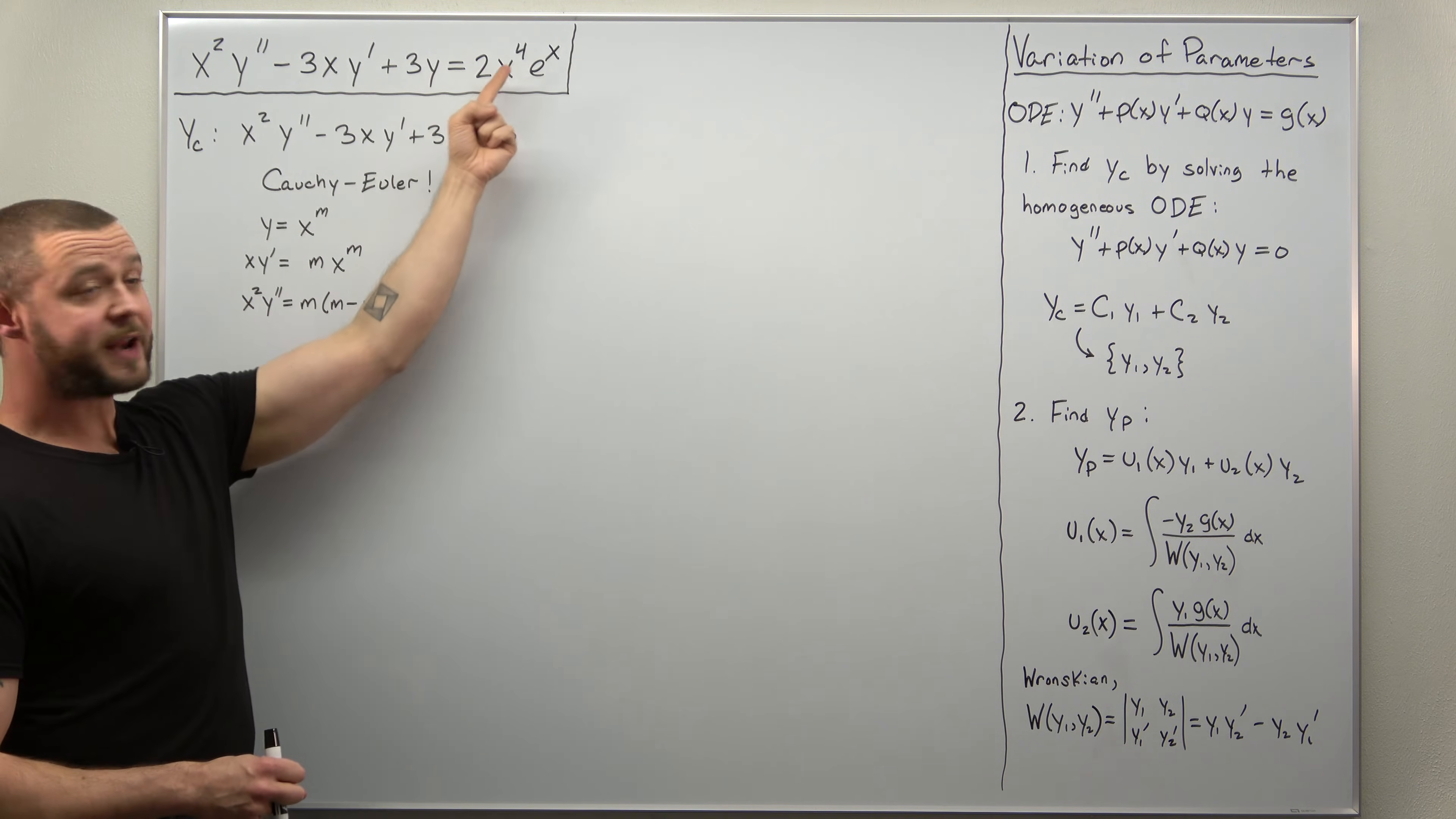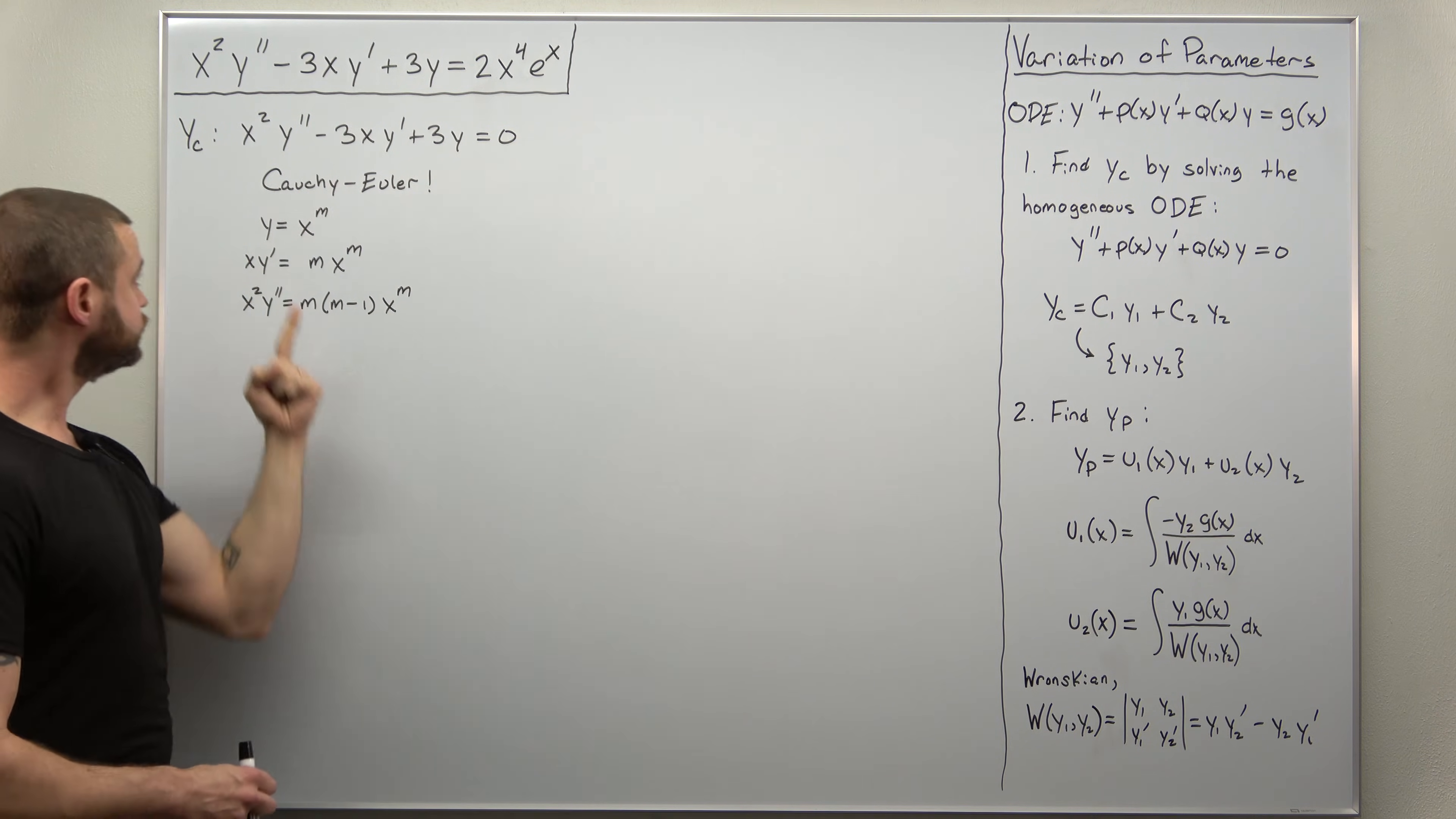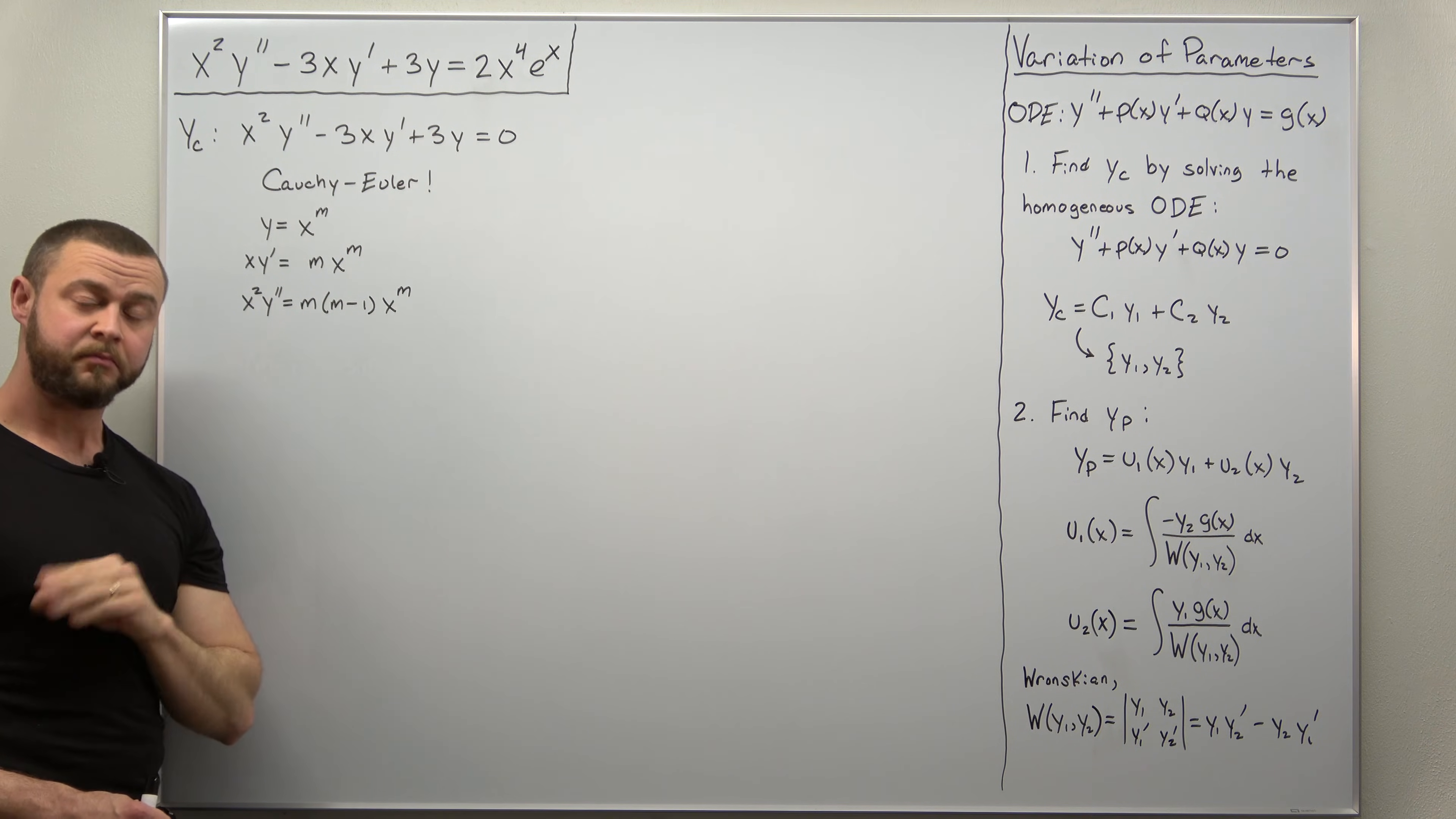So we're going to take the right-hand side, replace it with zero, and we get a Cauchy-Euler equation. We know how to solve that. Always start with solutions of the form Y equals X to the M, Y as a power of X. Calculate your derivatives, but Y prime and Y double prime get multiplied by X and X squared, which bump the powers back up, so everything contains X to the M.